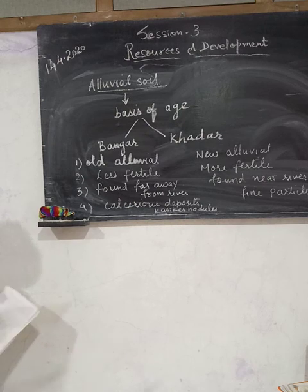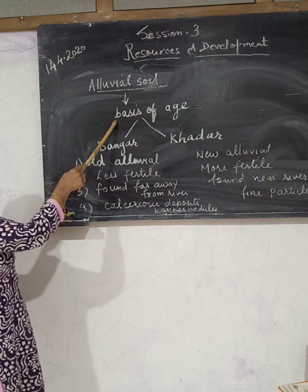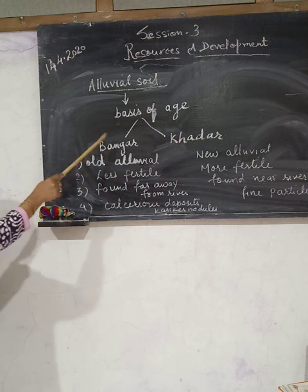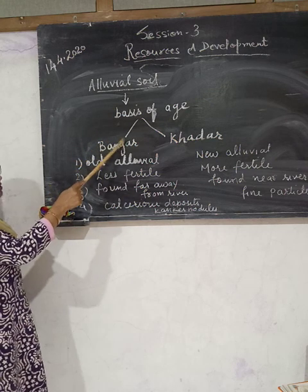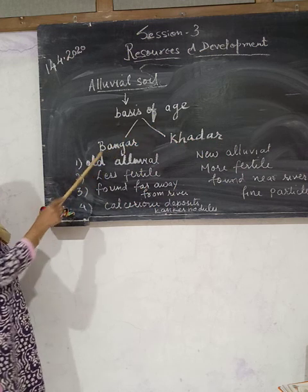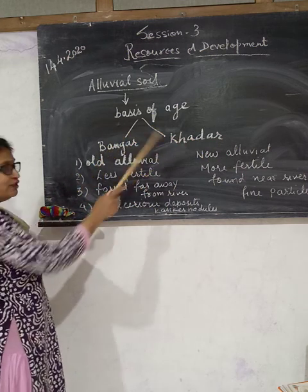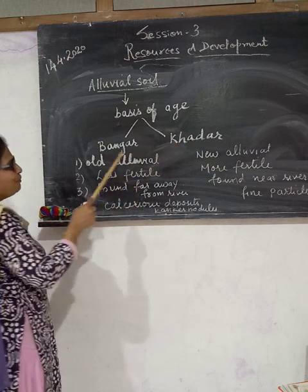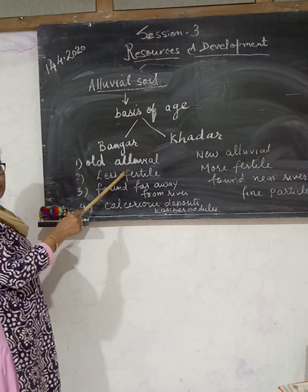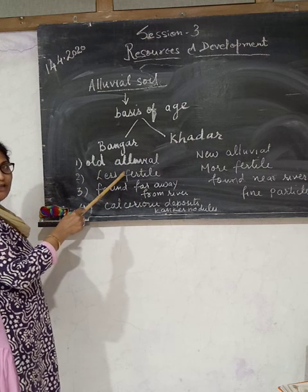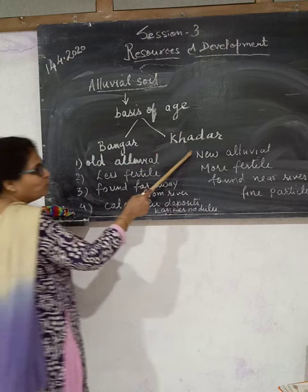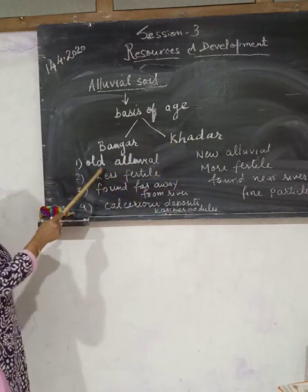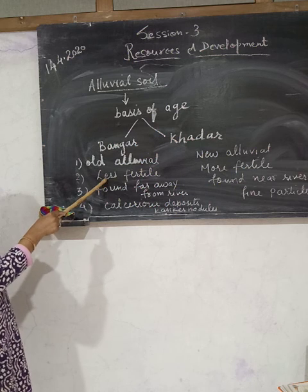Now this alluvial soil is classified on the basis of age. When we classify it on the basis of age, it is classified into Bangar and Khadar. Bangar means old alluvial soil, and new alluvial soil is called Khadar. This old alluvial soil, the Bangar, is less fertile.